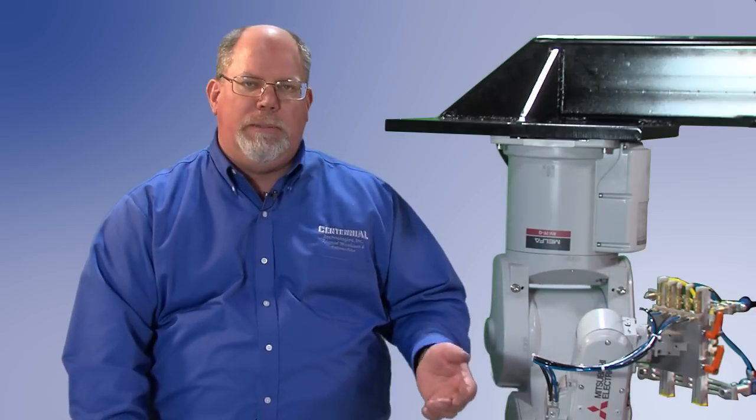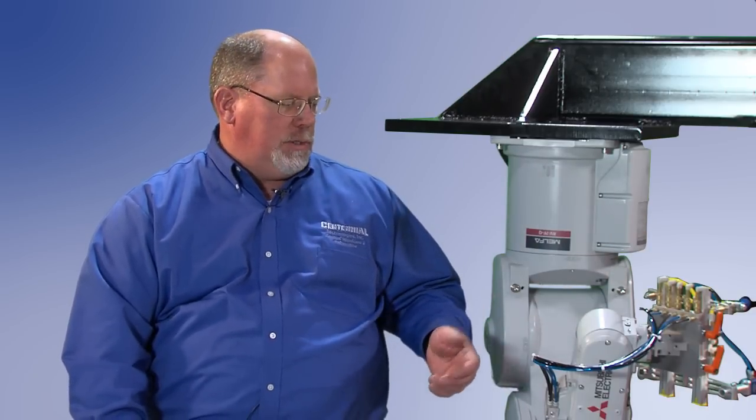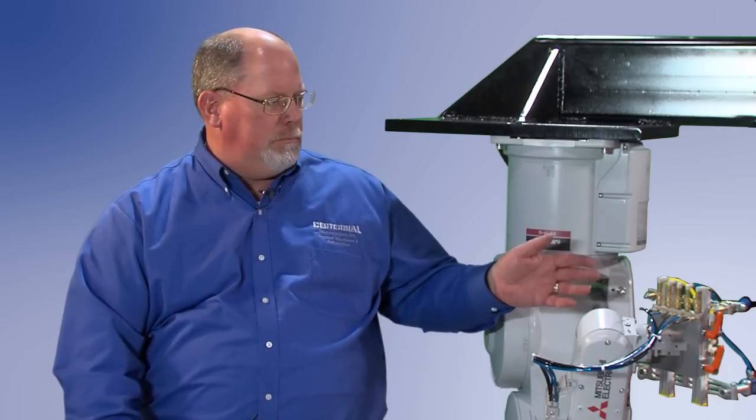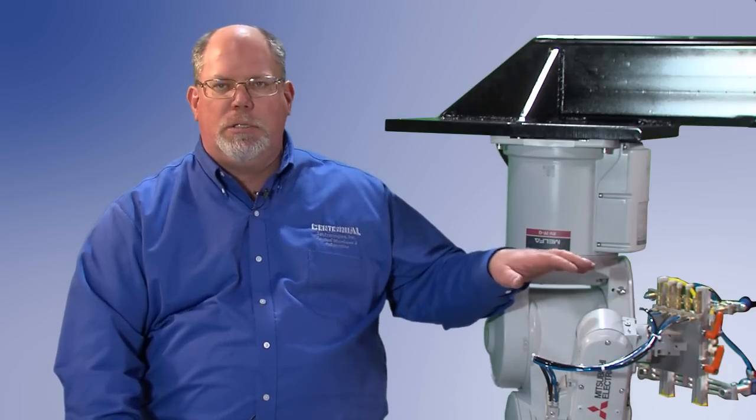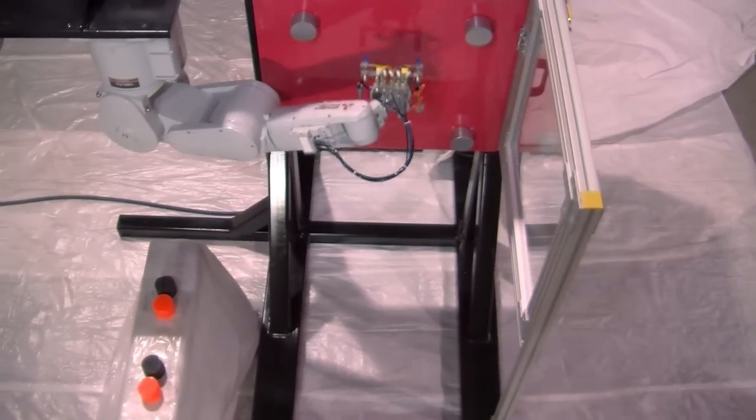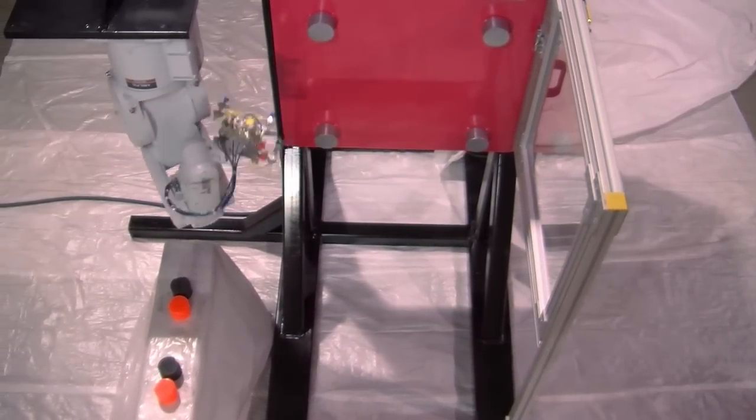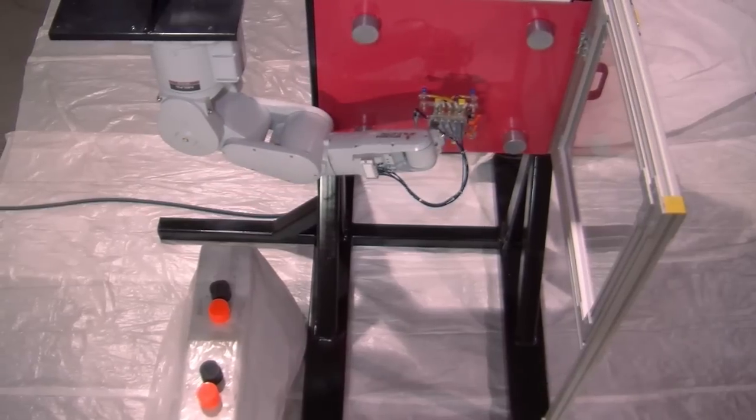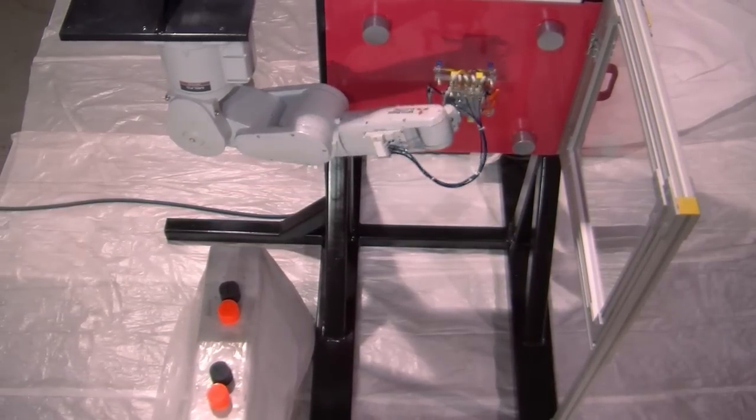To show you the capabilities of the Mitsubishi RV7 robot as one example. This is a middle-of-the-road reach robot for what we have to offer, but the concept here is to be able to show a smaller injection molding machine, mostly 300 tons and under, that we can adapt a six-axis robot to.